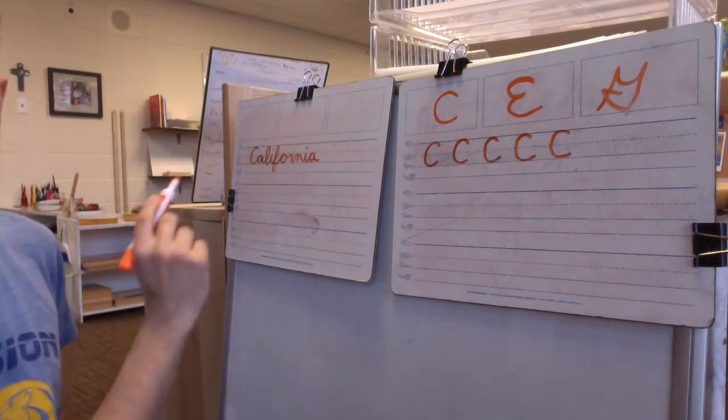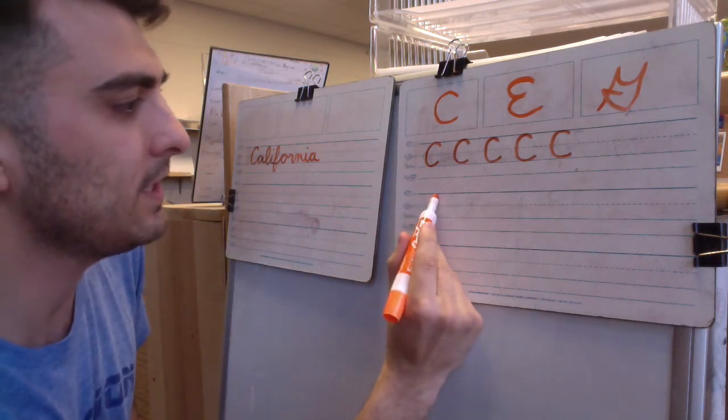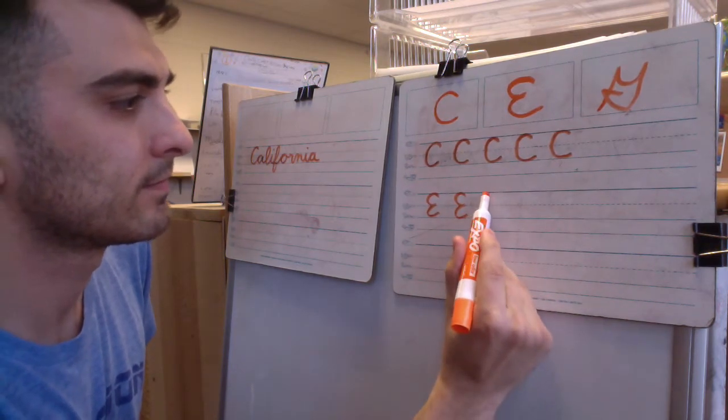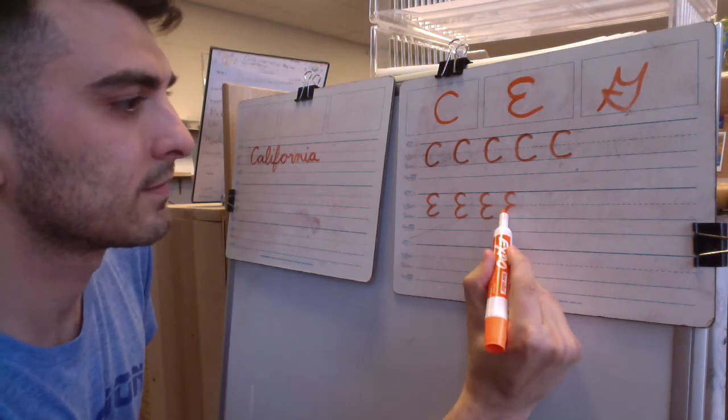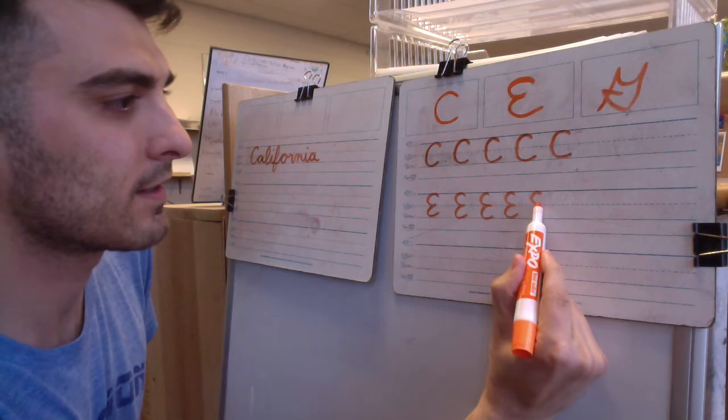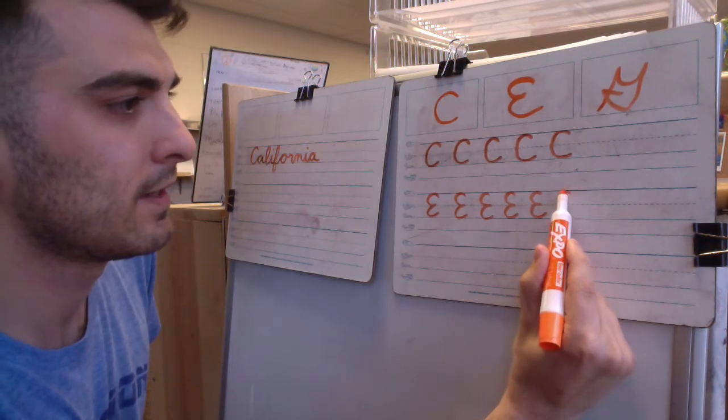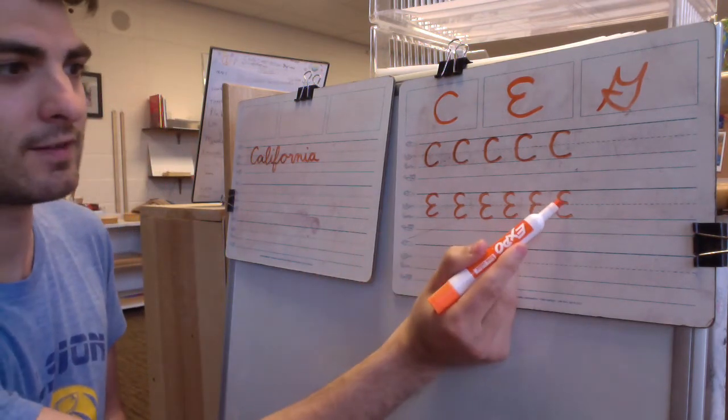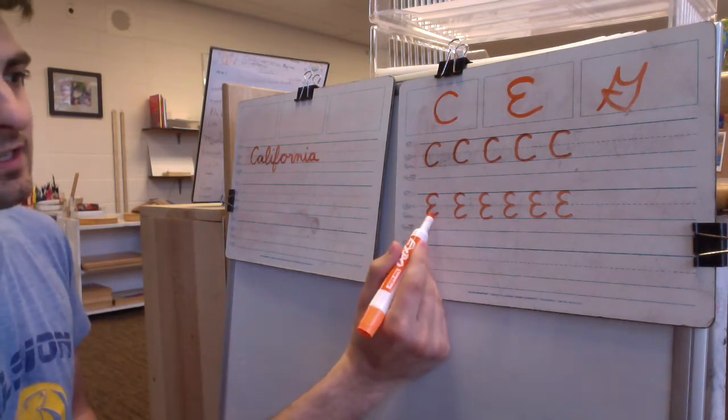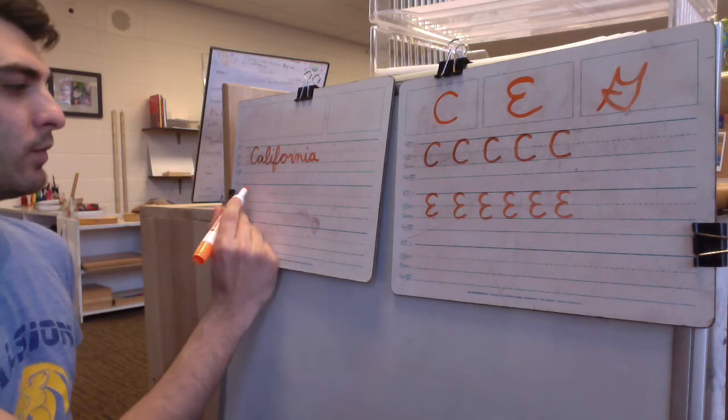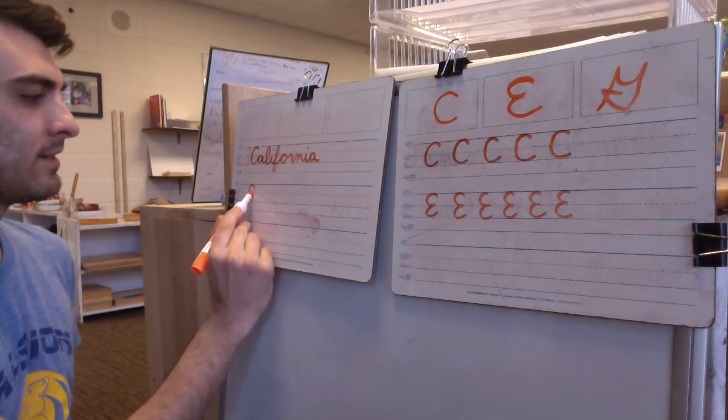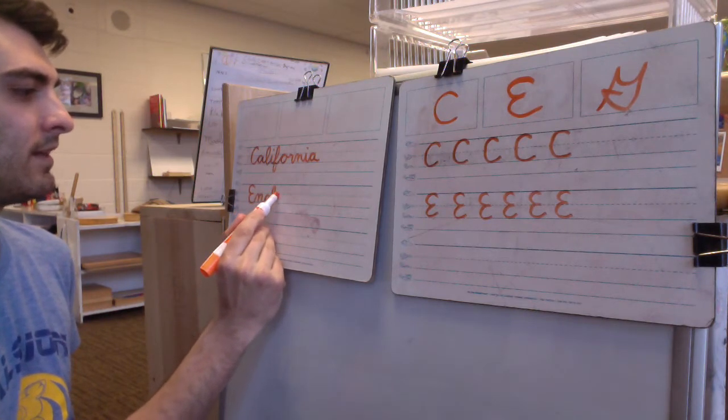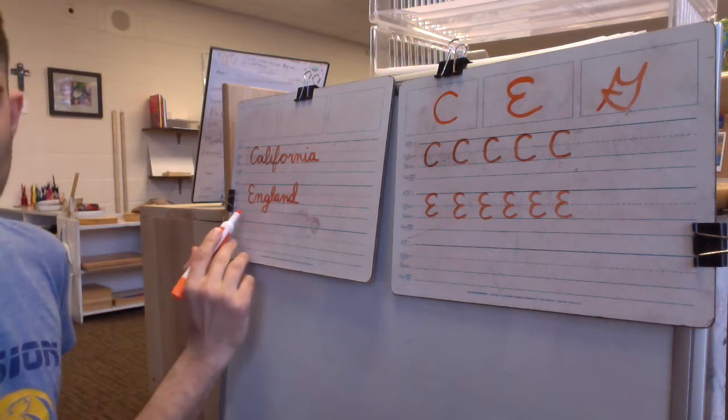Uppercase C, see how it connects right into it. California. All right, uppercase E kind of looks like a backwards three. Notice it comes in at that plain line, so this one is just like the C. It's going all the way from the sky to the grass line with that middle part. So if I were gonna write England, since it ends down here on the grass line they will connect. So we'll have an uppercase E which goes right into an N-G-L-A-N-D. England.